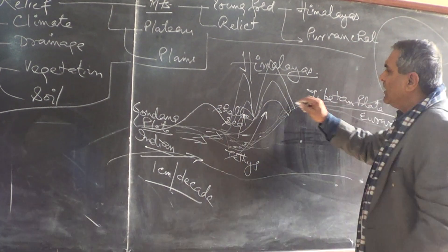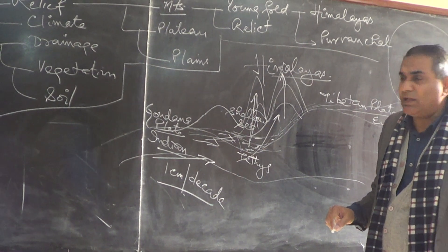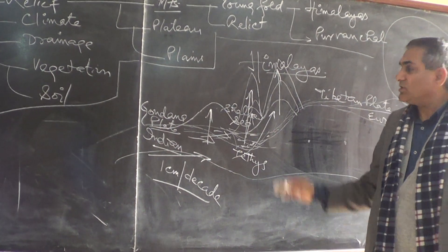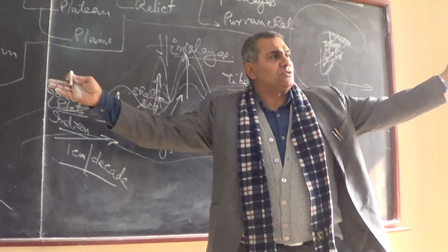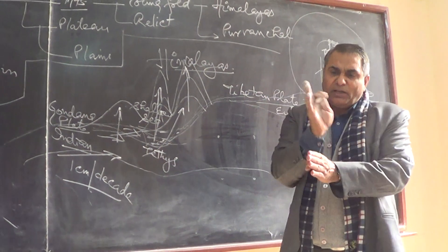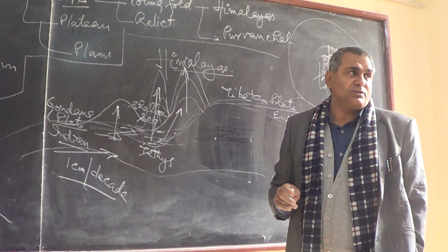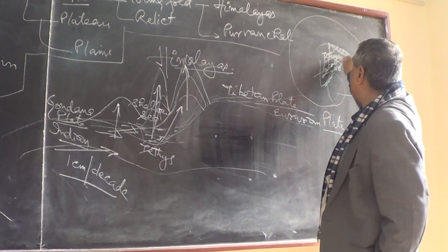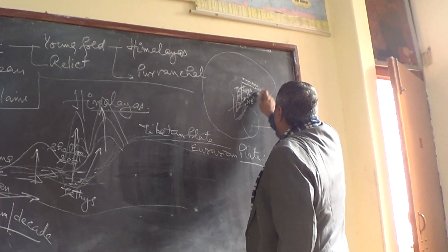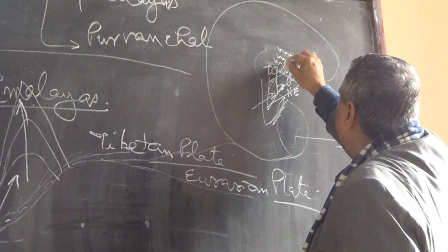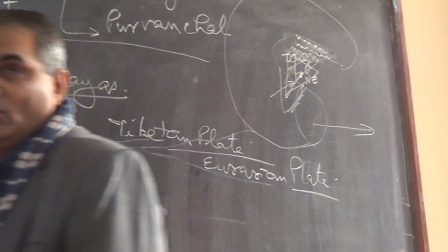This landmass is pushing from this side, so one range is the Greater Himalaya, this is called the Lesser Himalaya or Middle Himalaya, and this is called the Siwaliks. Three parallel ranges evolved over a length of 4,200 km in continuity, parallel to the Tibetan plain. One, two, and three: this is Greater Himalaya, this is Lesser Himalaya, and this is Outer Himalaya or Siwalik.